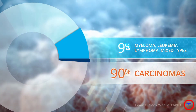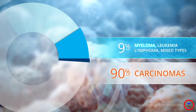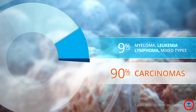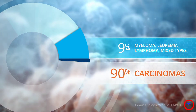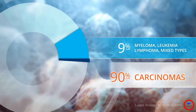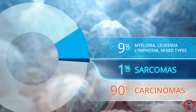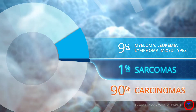Roughly 9% of all cancers are either myeloma, leukemia, lymphoma or mixed types, and approximately 1% of all cancers in adults are sarcomas.